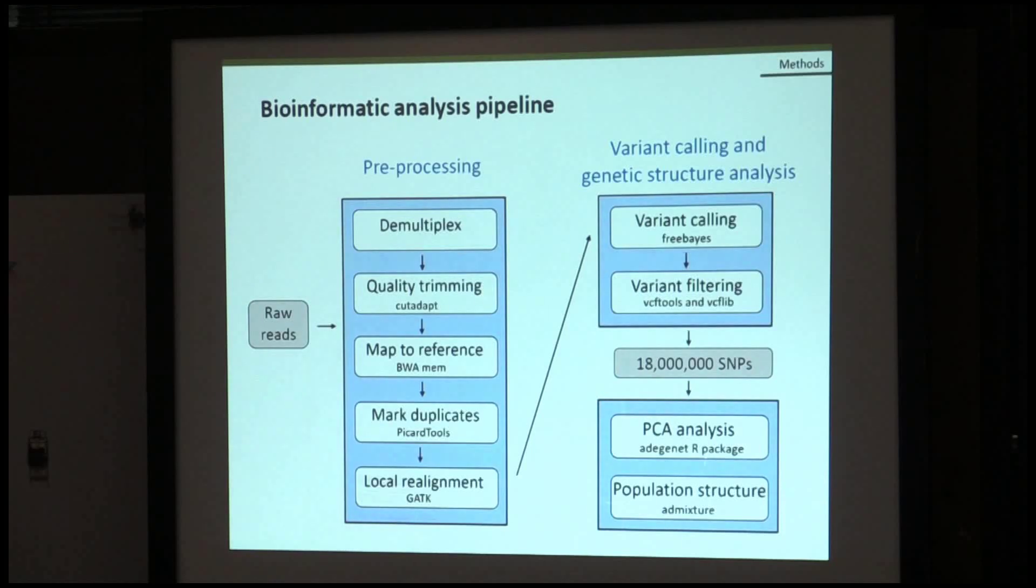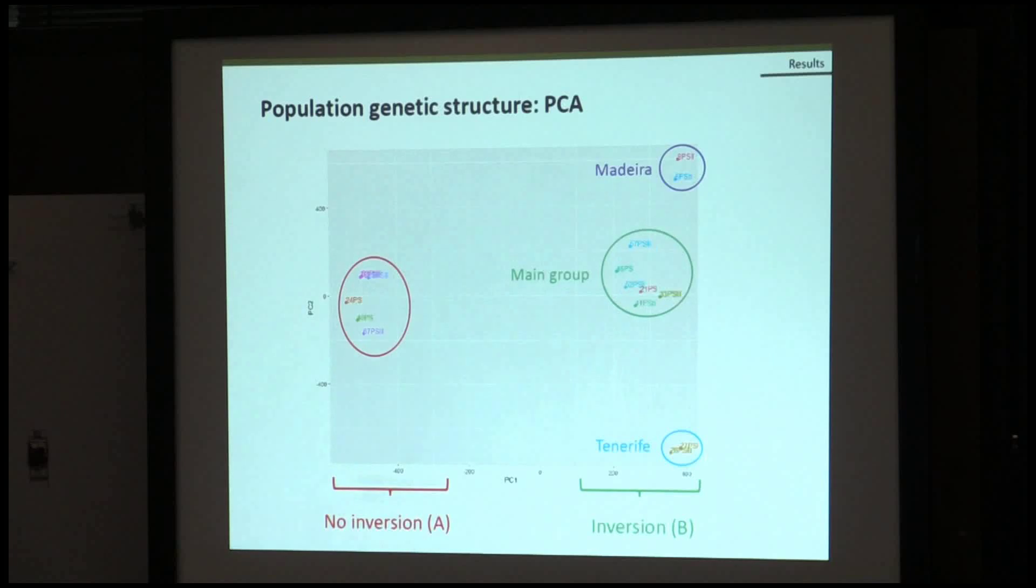These SNPs allowed us to carry out some population structure analysis, such as PCA and ADMIXTURE. The PCA revealed that the main division was between samples without the inversion, that were the previous cluster A, and those with the putative inversion. Moreover, inside this group, we can see that there are two clusters that are present just in Madeira and just in Tenerife. And a main group with samples both from Morocco, the southern part of the Iberian Peninsula, and from the other Canarian islands. It's important to notice that this group and this group have samples that proceed from the same locality. They are not separated geographically.